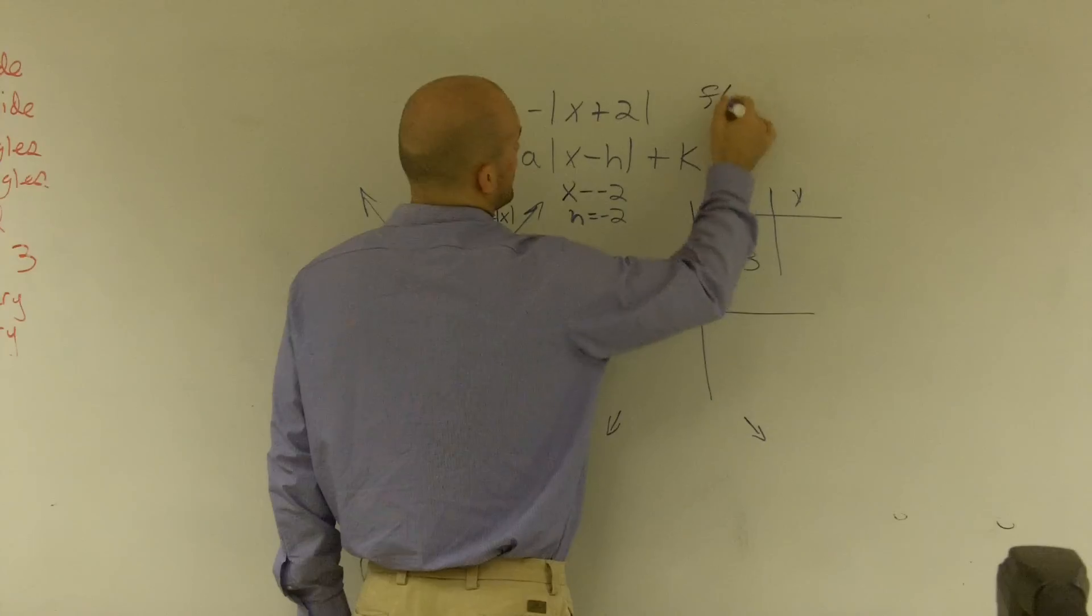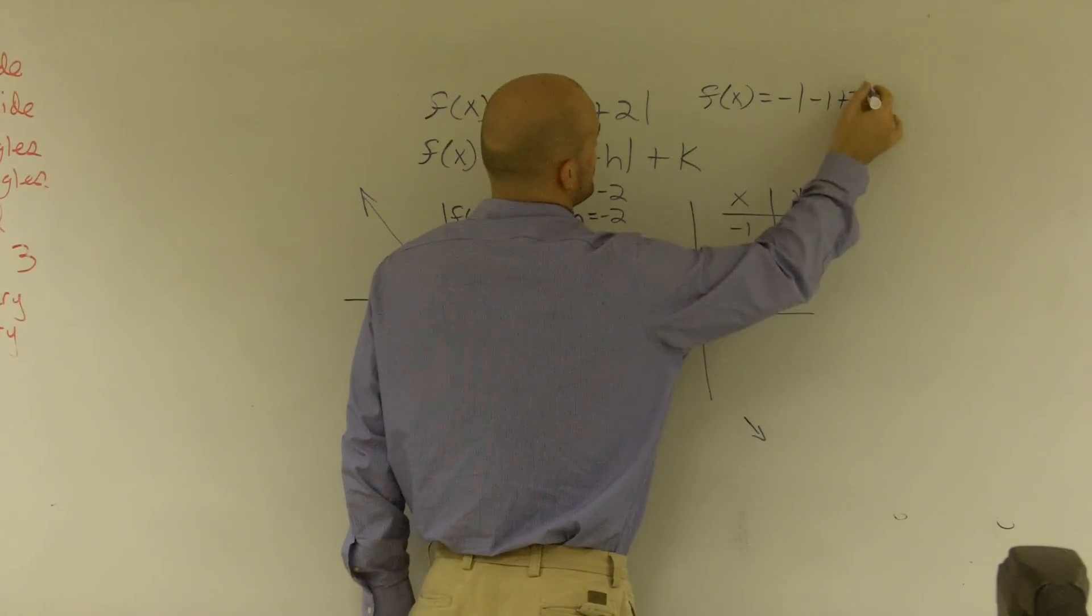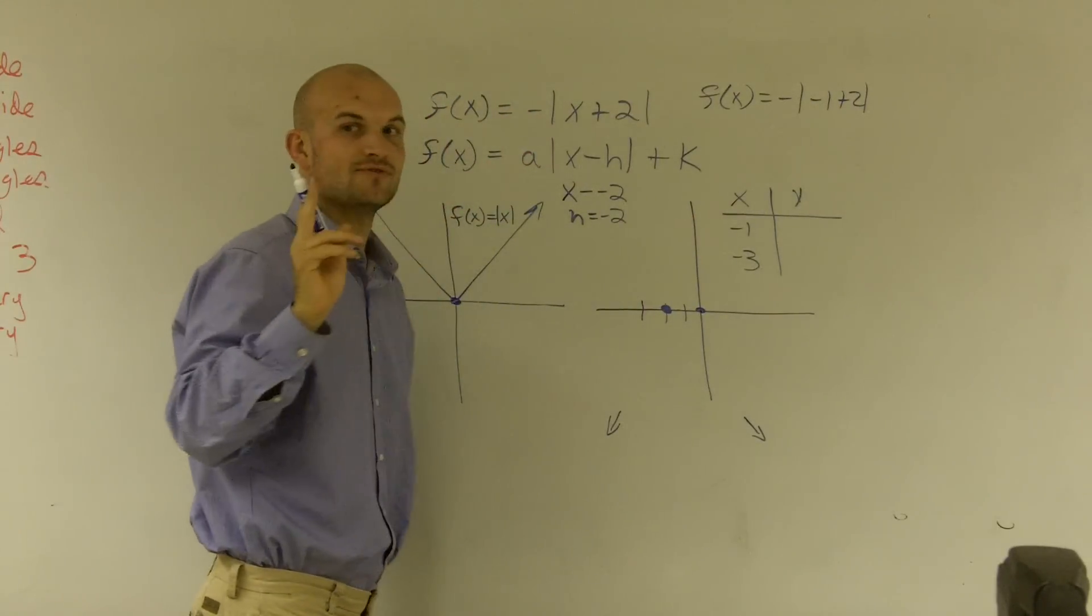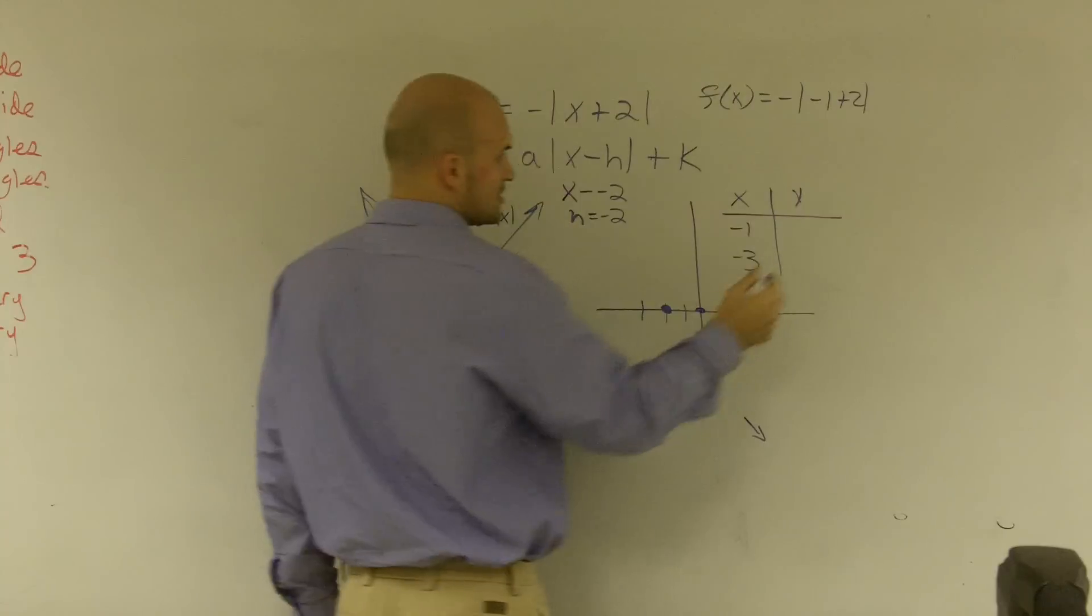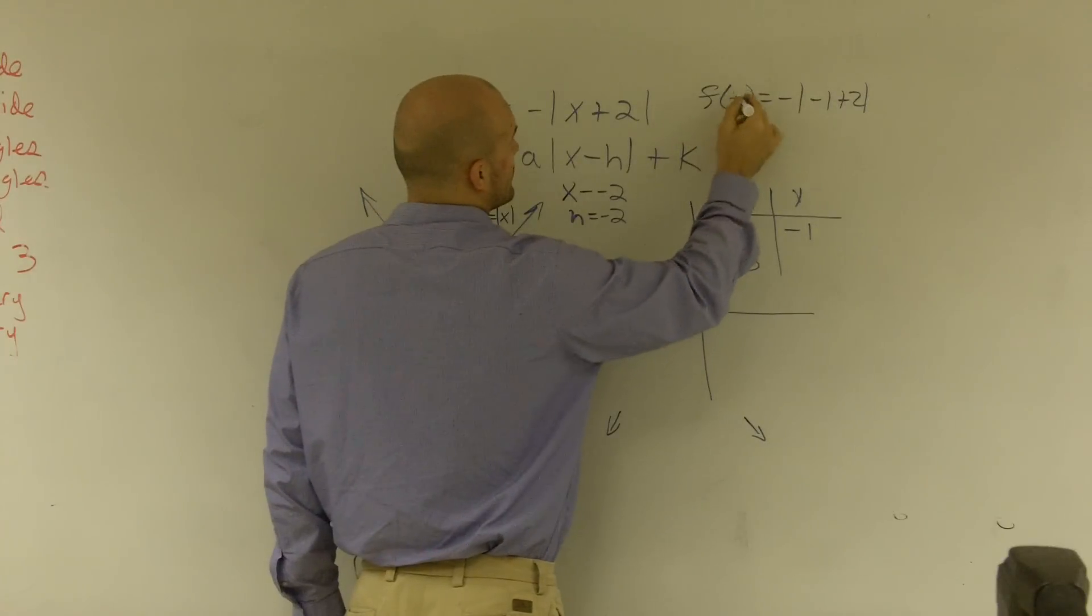So now I need to find the values of these two points. So I'll do f(x) = -|-1 + 2|. So -1 + 2 is 1. Absolute value of 1 is 1 times negative is going to be negative 1. Oh, that's f(-1).